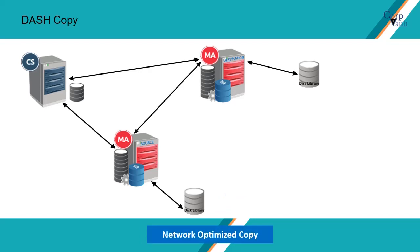Network Optimized Copy: Dash Copy with the Network Optimization option reduces the number of signatures that are sent over the network. However, this operation is I/O intensive on the disk because new signatures have to be created for the Dash Copy, and only unique signatures are sent over the network. Let's discuss how Dash Copy with Network Optimization works.